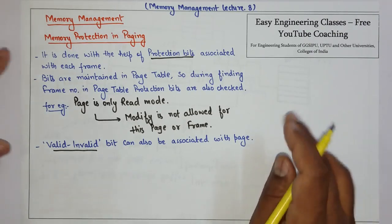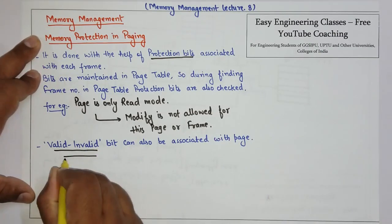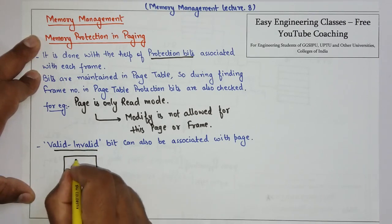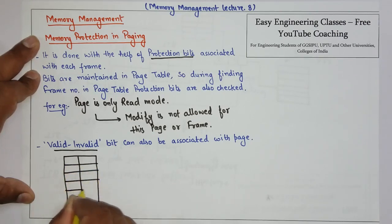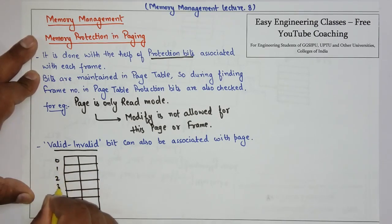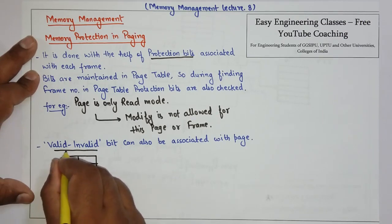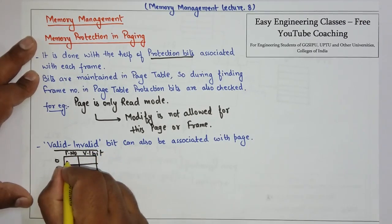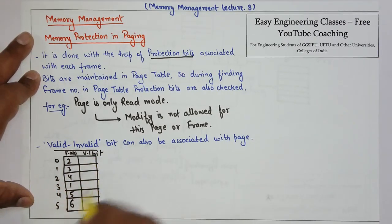The valid-invalid bit is also stored in the page table. The page table has a frame number column and a valid-invalid bit column. For example, suppose the frame numbers are 2, 3, 4, 1, 5, 6, each with a corresponding valid-invalid bit.